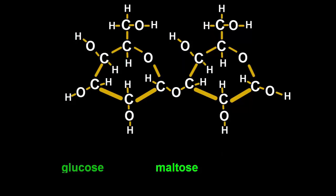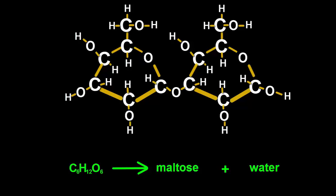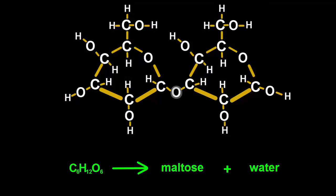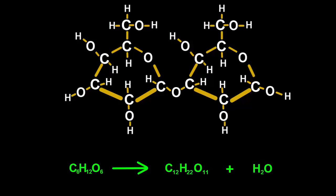We started with glucose and ended with maltose and the water that was extracted and disappeared from the stage. Glucose is C6H12O6, maltose has 12 carbons, 22 hydrogens, and 11 oxygens, so its molecular formula is C12H22O11.